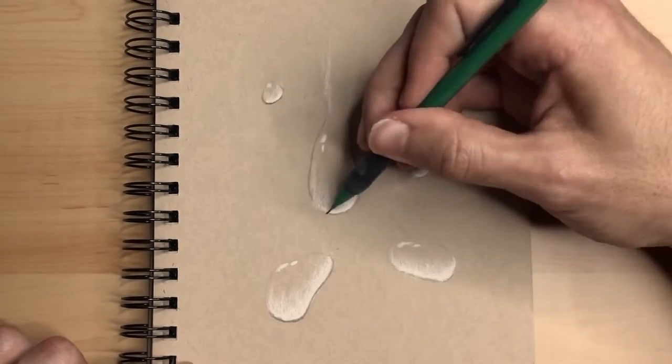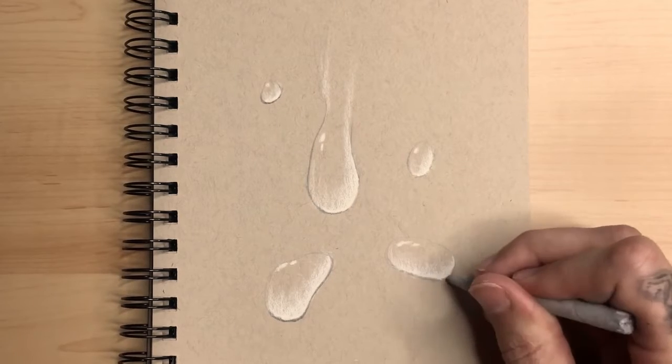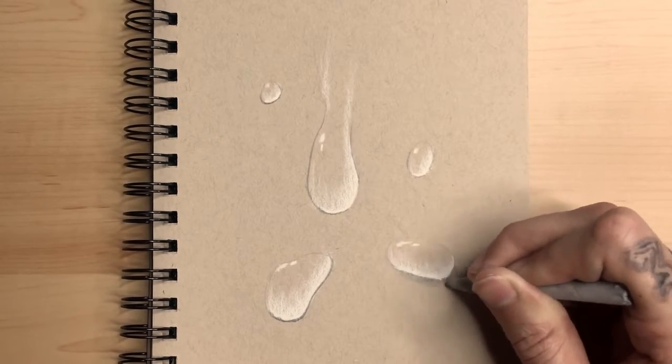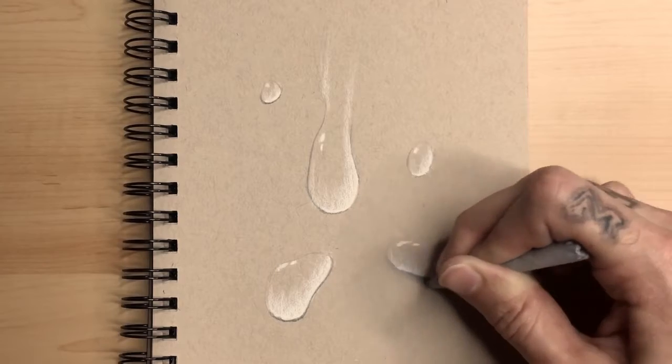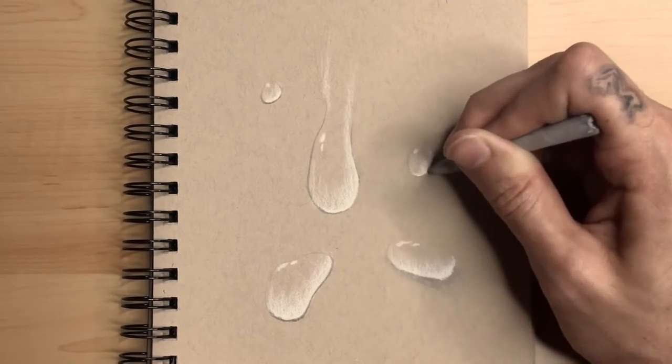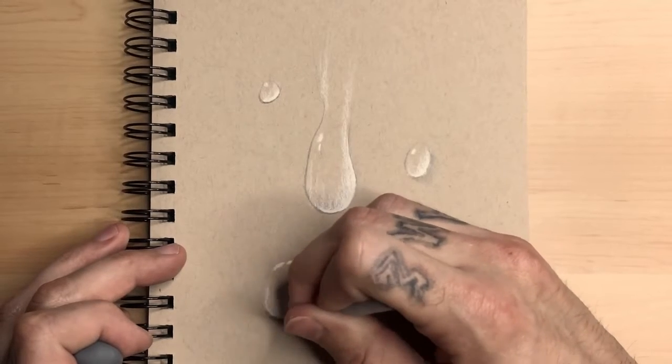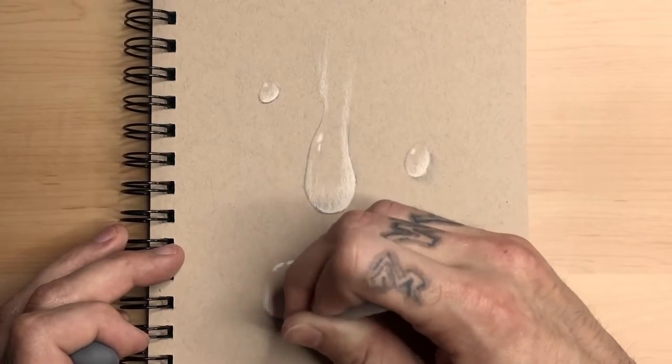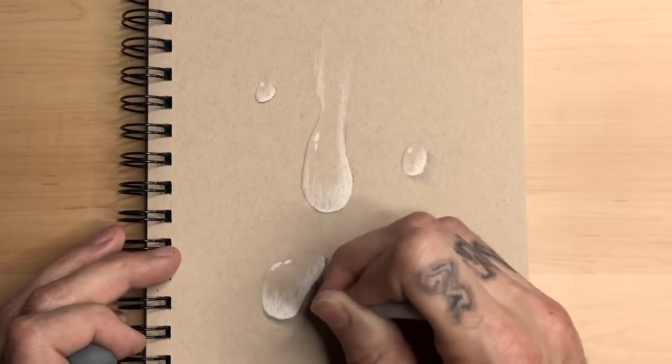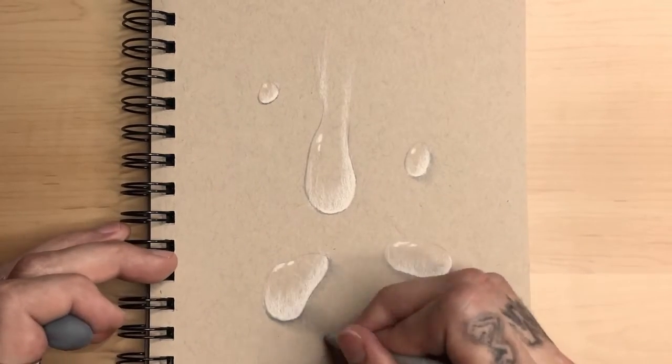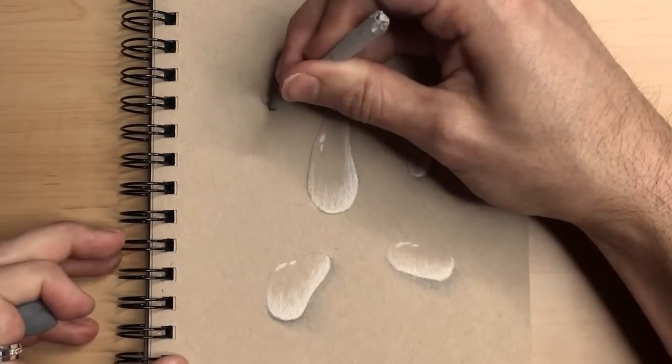So then I grab my blending tool and blend the graphite, pulling it to the bottom right corner of each droplet because my light source is from the top left. I want my shadows aimed towards the bottom right, giving the illusion that it's actually popping off the paper. We all know it's definitely not, but it still looks really cool.